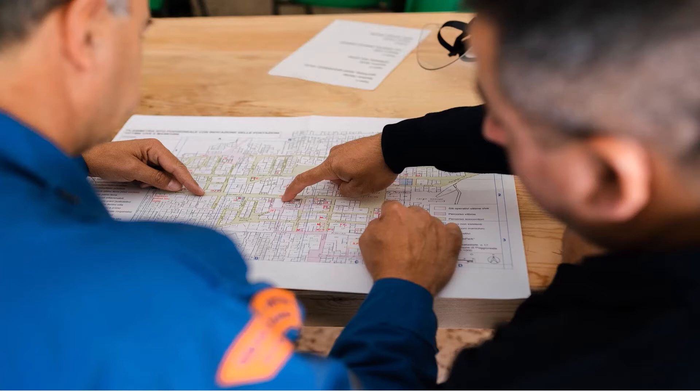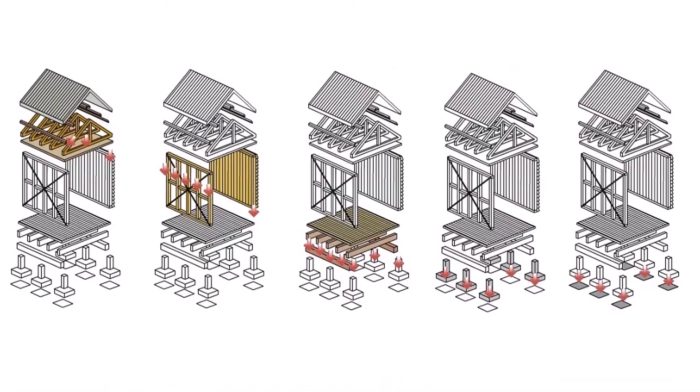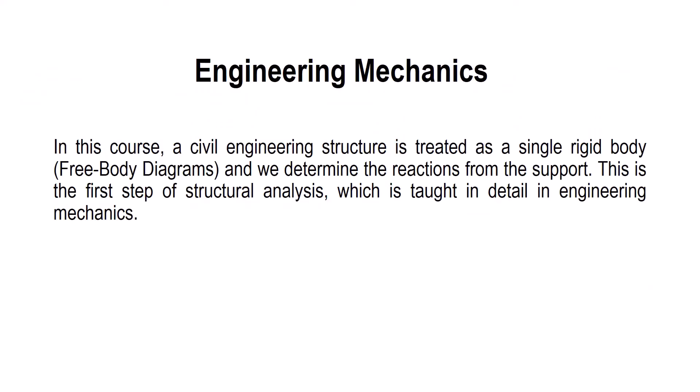A civil engineering structure is one that transfers the load coming over it to the supports and ultimately to the ground. In your first year of B-Tech in civil engineering, the first introduction to structural analysis is Engineering Mechanics. In this course, a civil engineering structure is treated as a single rigid body and we determine the reactions from the supports.